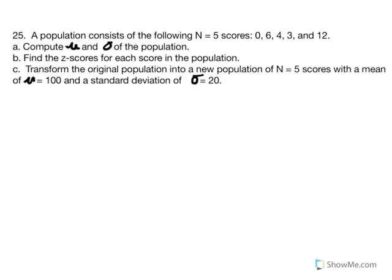Number 25 incorporates skills learned since Chapter 3: calculating the mean, standard deviation, z-scores, and converting a distribution into a standardized distribution. We begin by computing the mean and standard deviation of this population of scores: 0, 6, 4, 3, and 12.